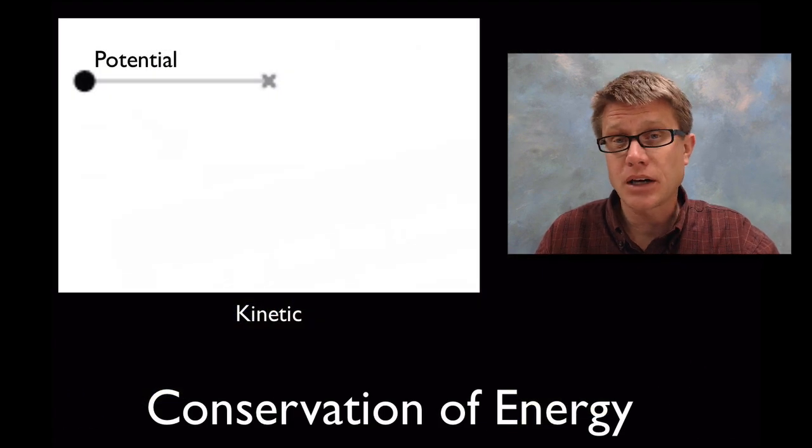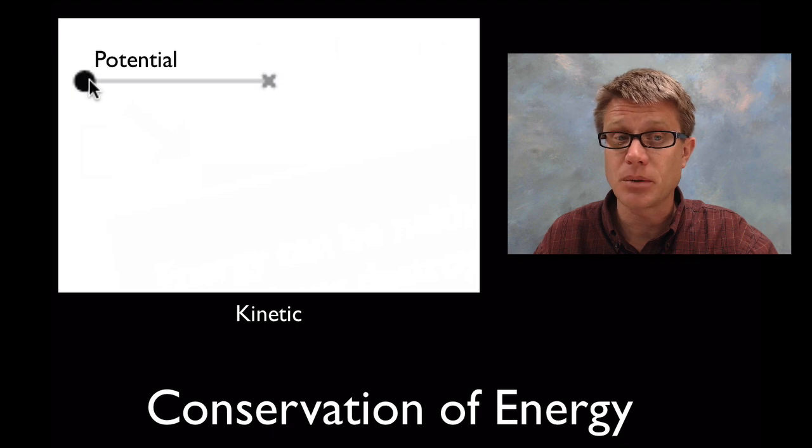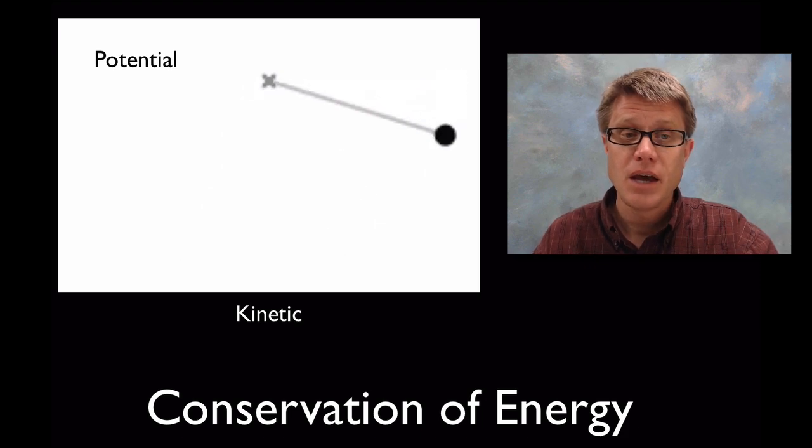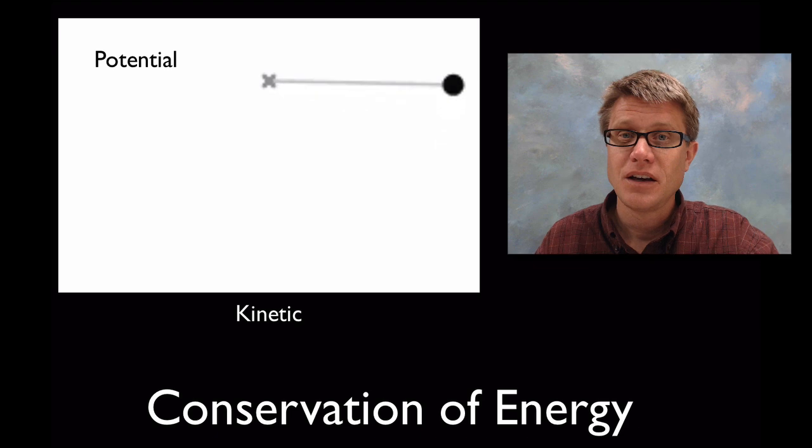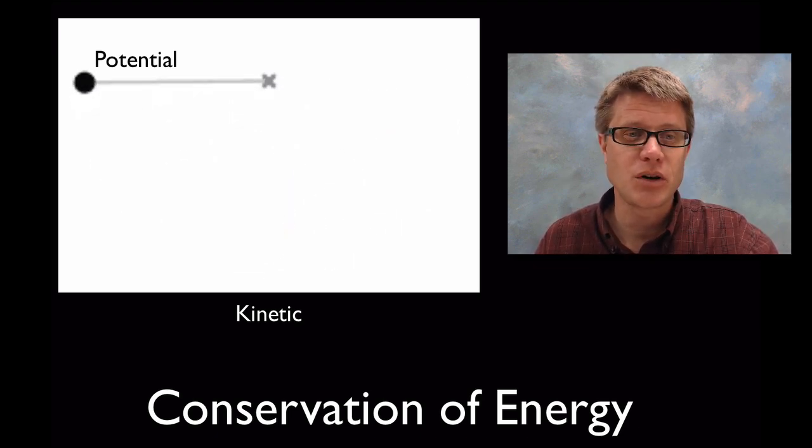Then finally we can start to apply this in different levels. If we have a pendulum right here, a pendulum is going to have a certain amount of potential energy up here. As we let it go it's going to convert some of that energy into kinetic energy. And then it's going to go back to potential, to kinetic, to potential, to kinetic, to potential.